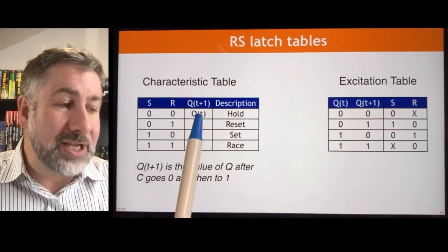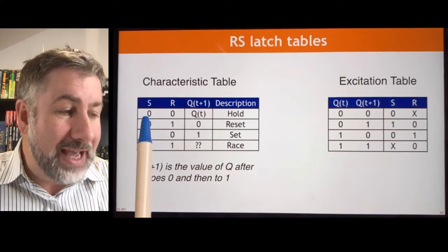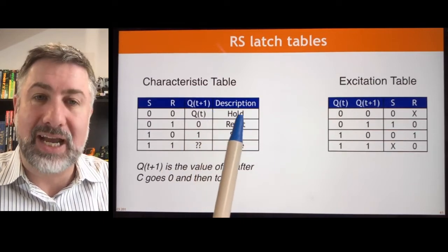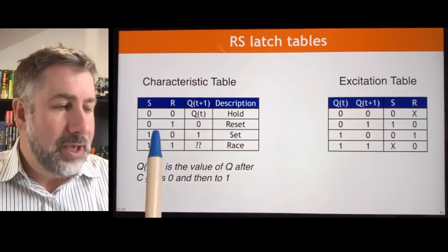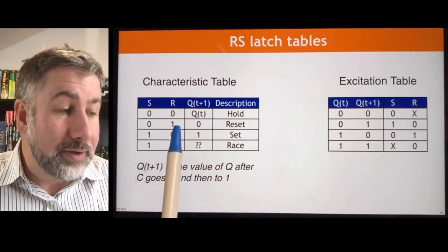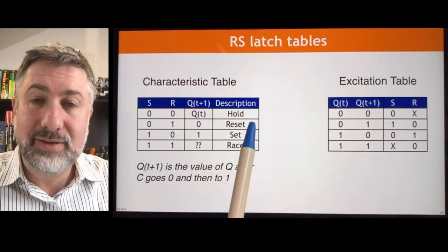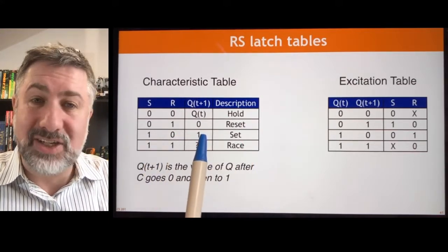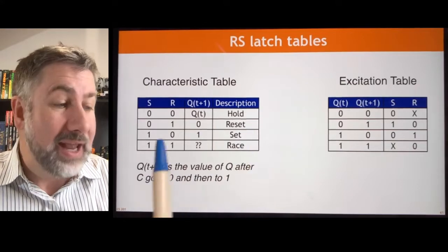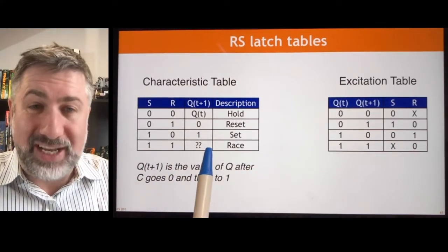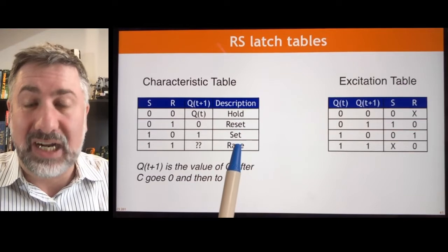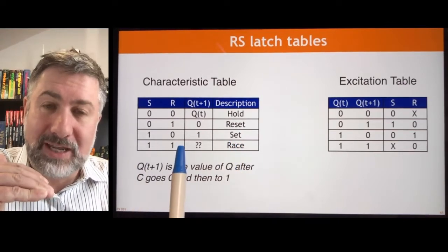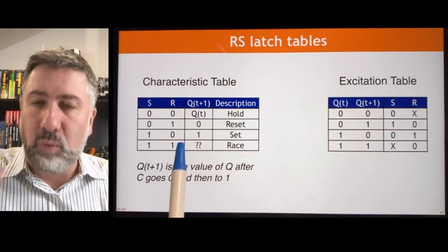Given the inputs and the current state, what happens? If S and R are both zero, the next state equals the current state — I'm holding that memory. If S is zero and R is one, the next state is zero — I'm resetting the latch. If S is one and R is zero, the next state is one — I'm setting the latch. And if S and R are both one, I don't know what the next state will be, because this is that unstable race condition. When the clock returns to zero, both inputs being one forces a race condition and weird things will happen.